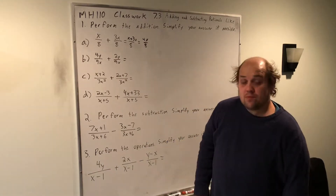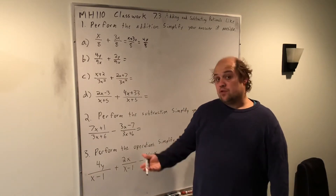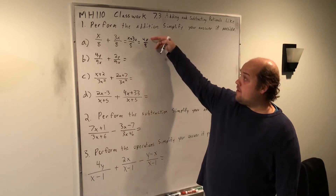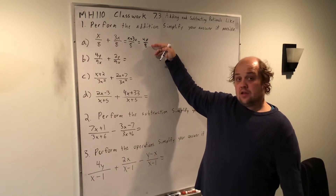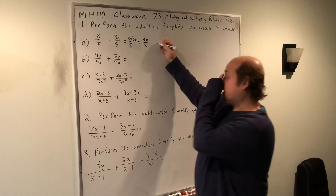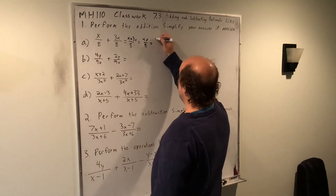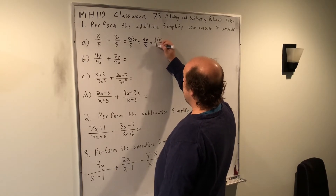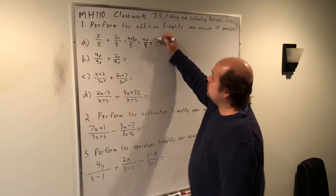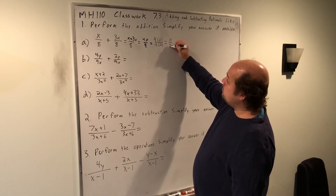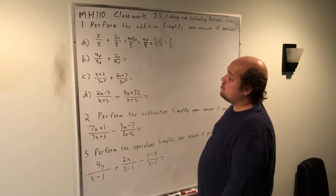Almost all of these problems are designed to be reducible once they get into their final form. Here when I have 4X divided by 8, the 4 can go into both things. On top it's really 4 times X, and on bottom it's 4 times 2. So that 4 is the repeated factor that goes away and leaves me with a final answer of X over 2.